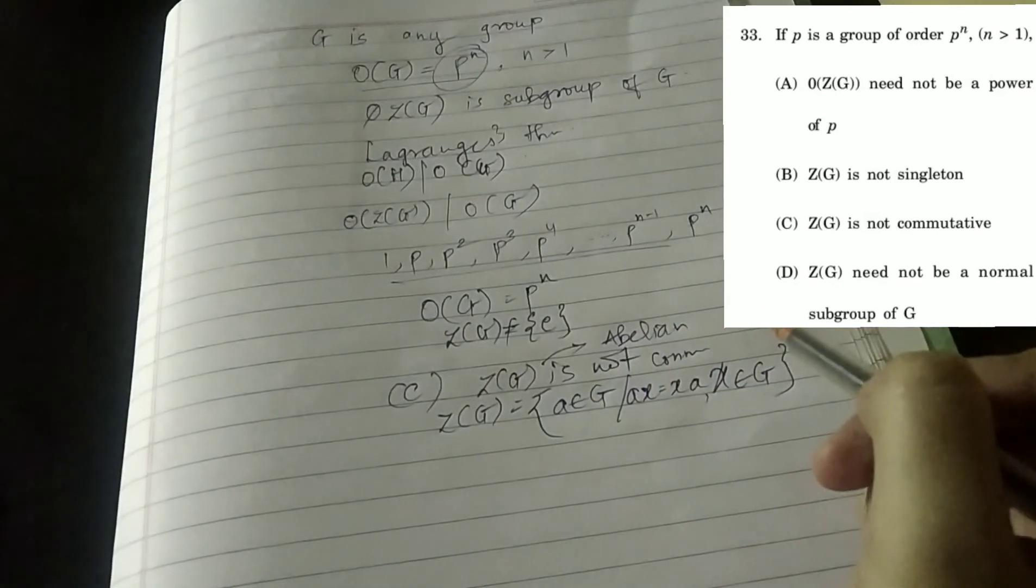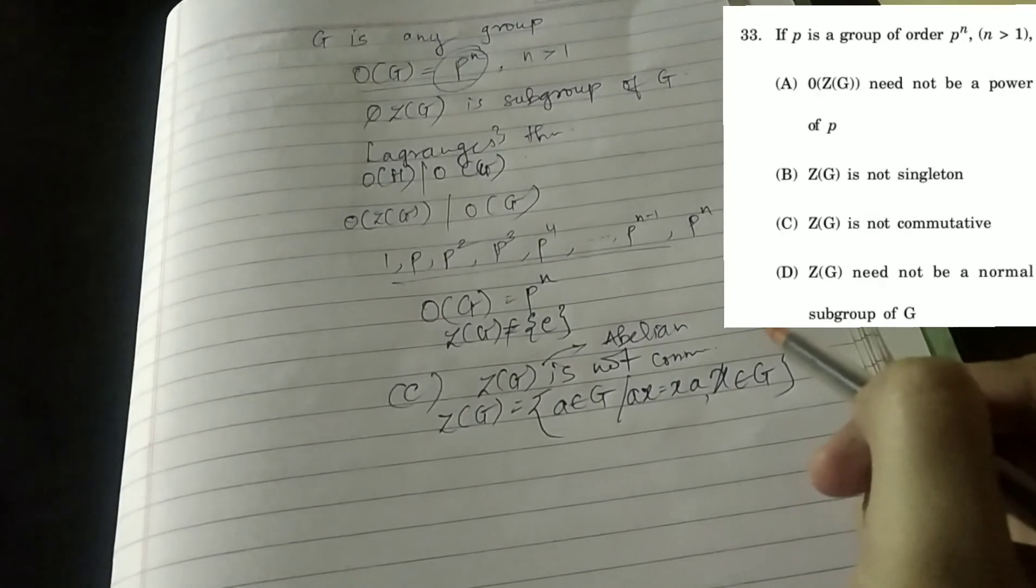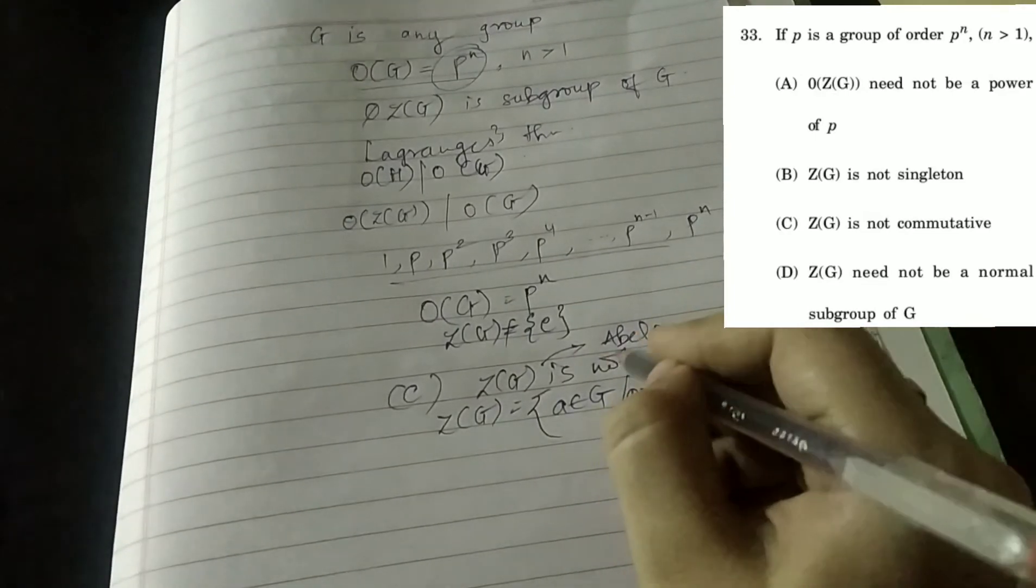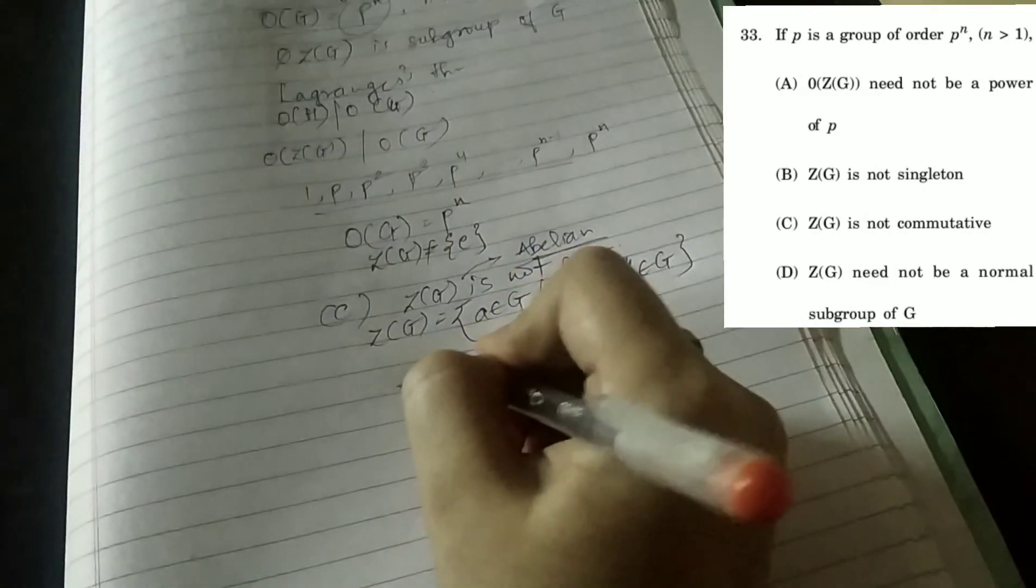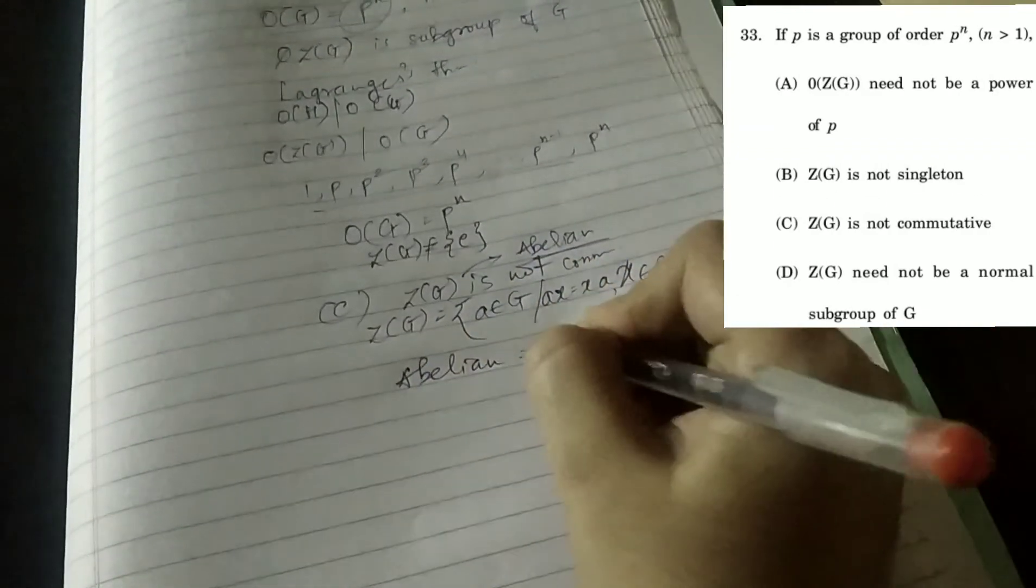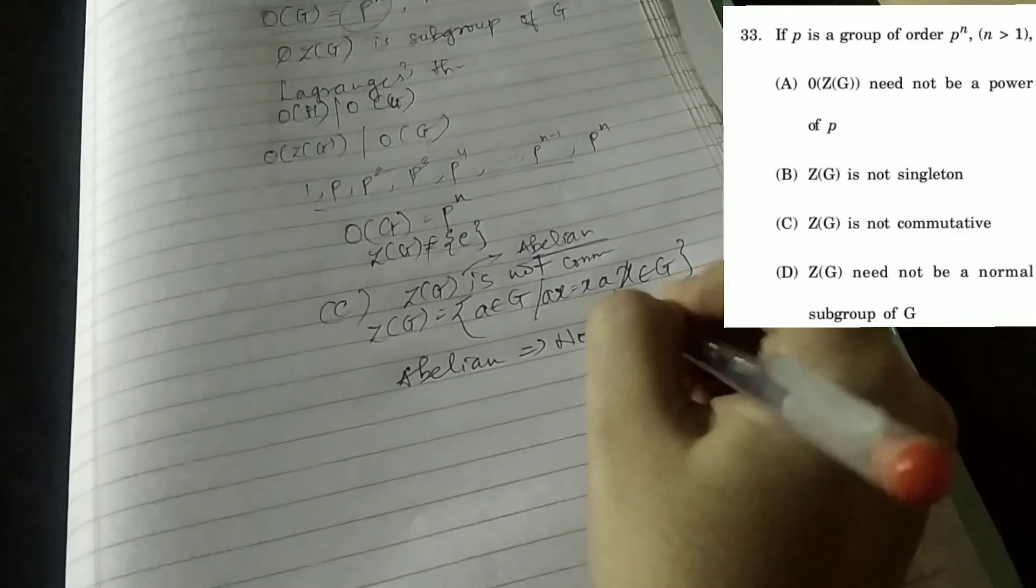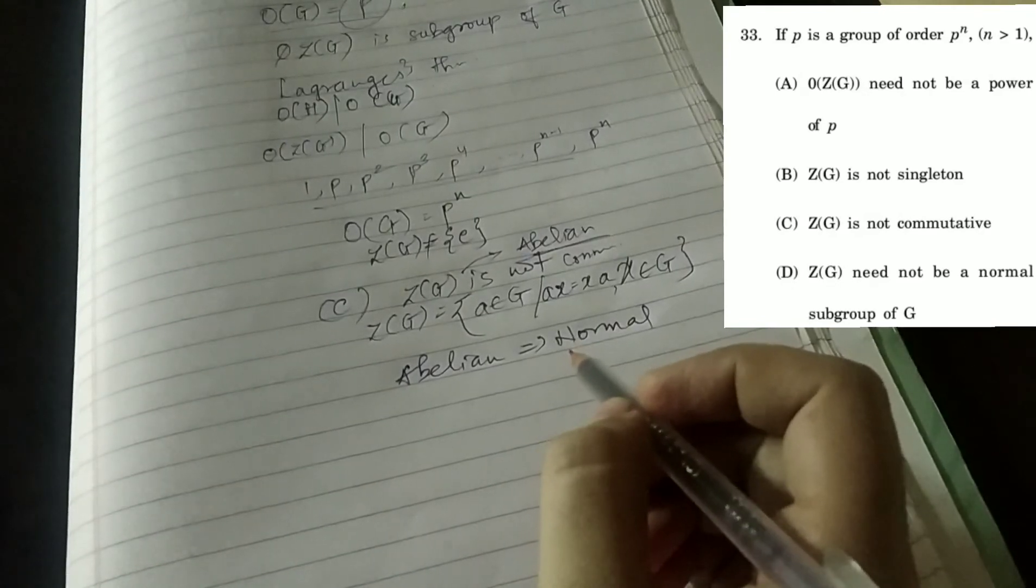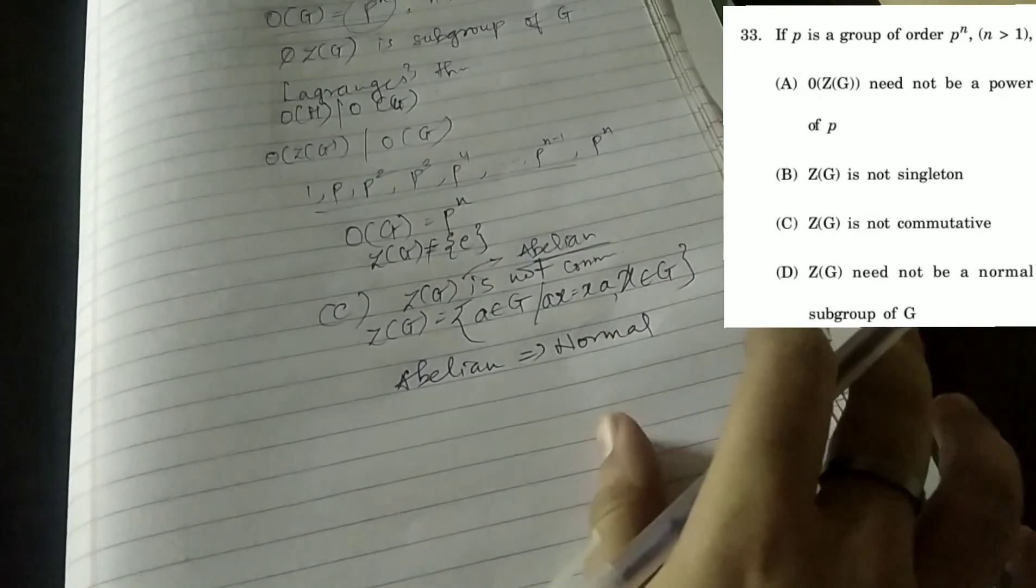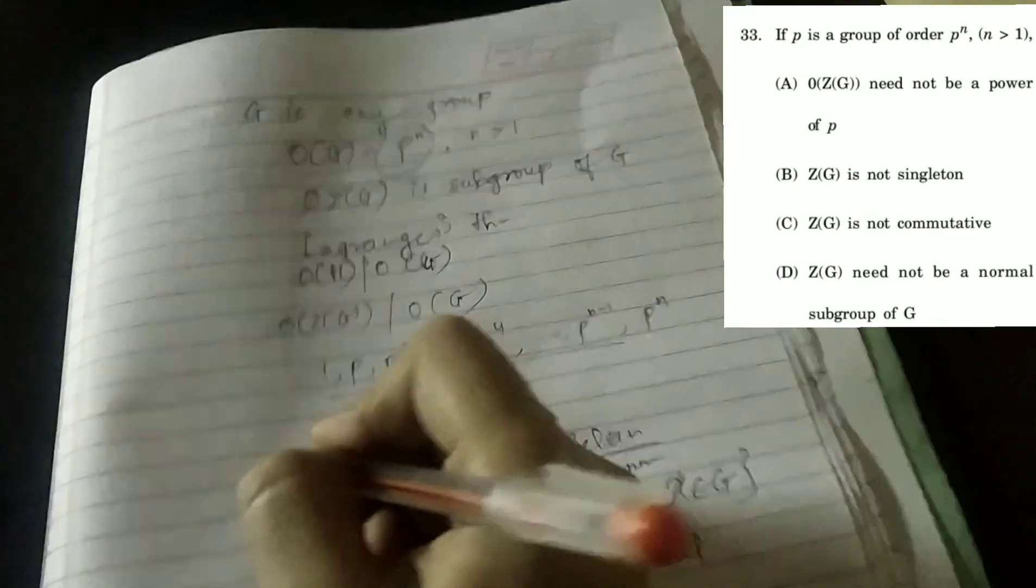And option D is that Z(G) need not be normal subgroup of G. Again this is wrong since Z(G) is abelian and we know that abelian group implies normal group. So it is normal group. Z(G) is always normal subgroup of G. So option D is also wrong. So correct option is B.